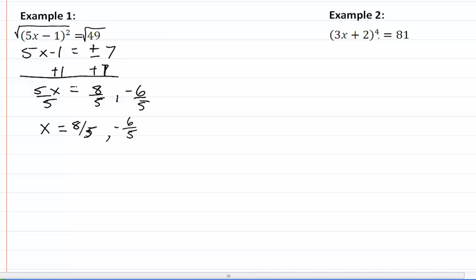Let's take a look at our second example. We are going to take the fourth root because we have the fourth power. And so we will get 3x plus 2 equal to plus or minus 3.